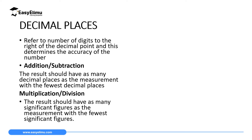Decimal places refers to the number of digits to the right of a decimal point, and this determines the accuracy of a number or an operation — whether multiplication, addition, subtraction, and so on. The number of decimal places is very important, and we're going to consider the first case here.